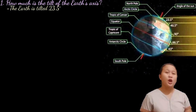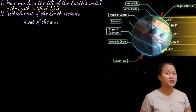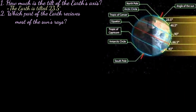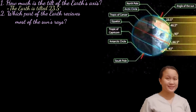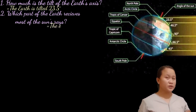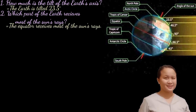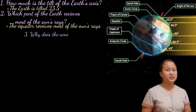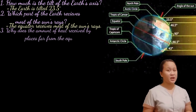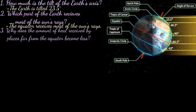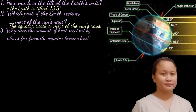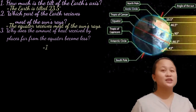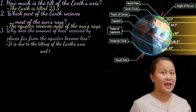Question number two: Which part of the Earth receives most of the sun's rays? The answer is it is the equator that receives most of the sun's rays. Question number three: Why does the amount of heat received by places far from the equator become less? The answer is it is due to the tilting of the Earth's axis and the shape of the Earth.